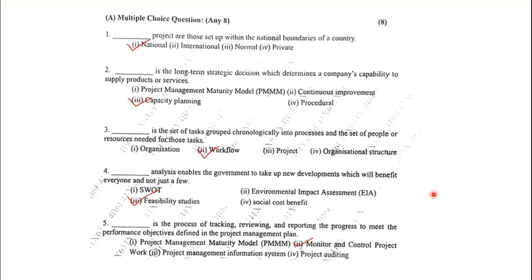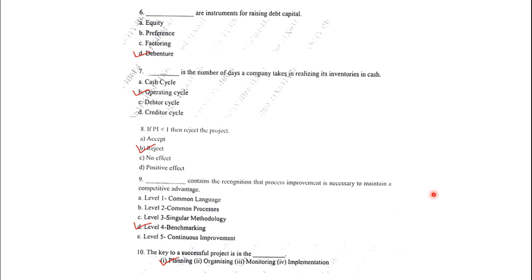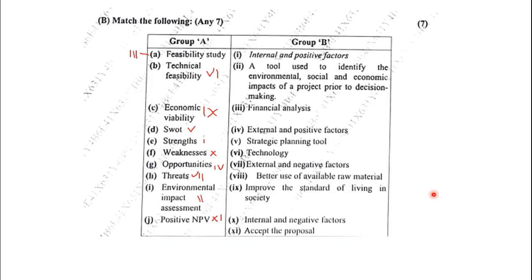This was the first set of MCQs that were asked in the April 2024 question paper. These were the next set of MCQs. Along with this, the next objective question was match the column with the answers.